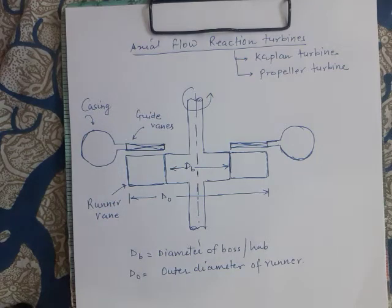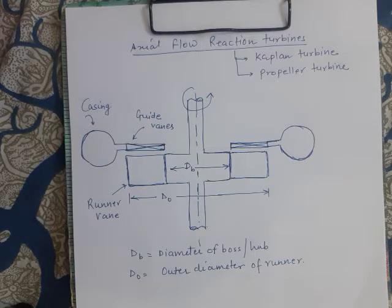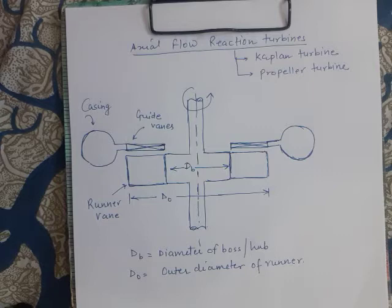Welcome to this session on fluid machines. In previous lectures we studied the Pelton wheel turbine and the Francis turbine. Now in this lecture we are going to understand the concept of axial flow reaction turbines. The Pelton wheel was an example of an impulse turbine; the Francis turbine was an example of an inward flow reaction turbine with radial entry and radial exit. Now we will study axial flow reaction turbines.